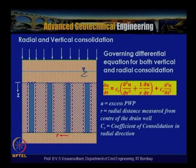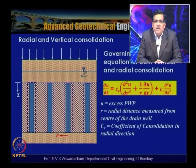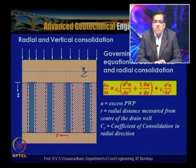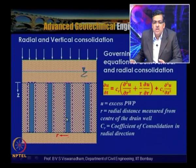The governing equation is ∂u/∂t = Cr(∂²u/∂r² + (1/r)∂u/∂r) + Cv(∂²u/∂z²), where the first component belongs to radial drainage and the second to vertical drainage. Here u is the excess pore water pressure, r is the radial distance measured from the center of the drain well, and Cr is the coefficient of consolidation in the radial direction.